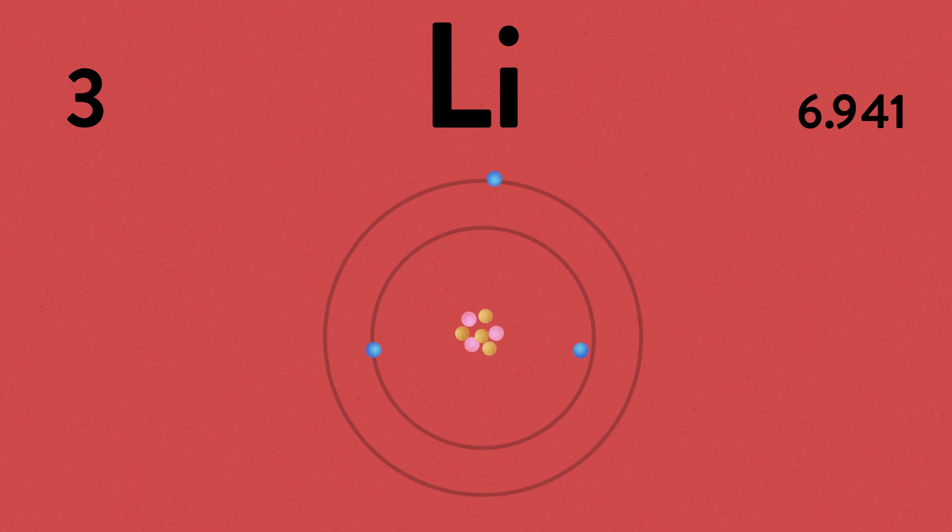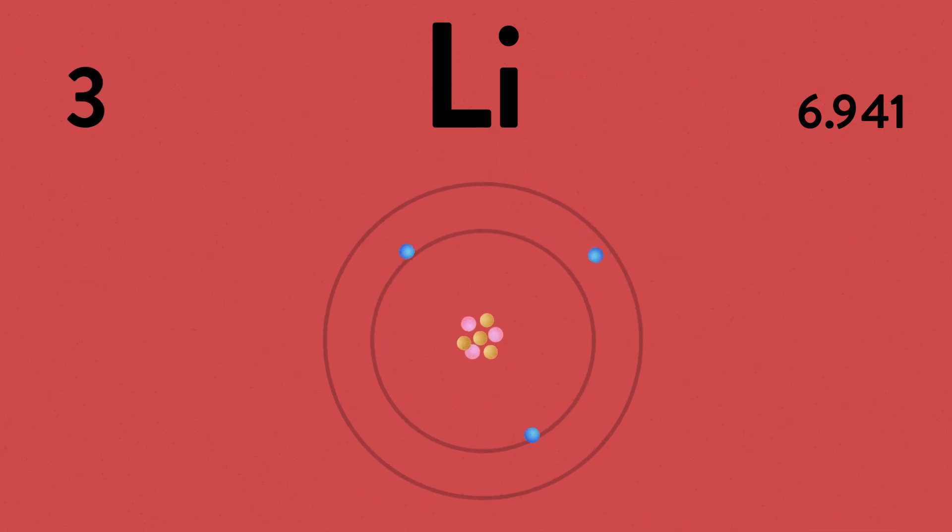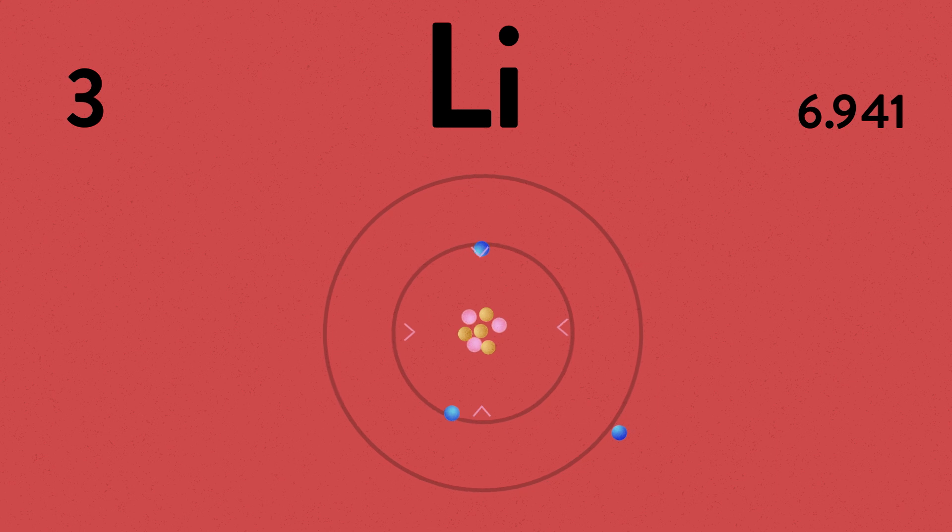Lithium has an atomic number of 3. This means a neutral atom of lithium will have three protons and three electrons. There are two electrons in the inner shell and one in the outer shell. The positively charged protons pull in the negatively charged electrons.